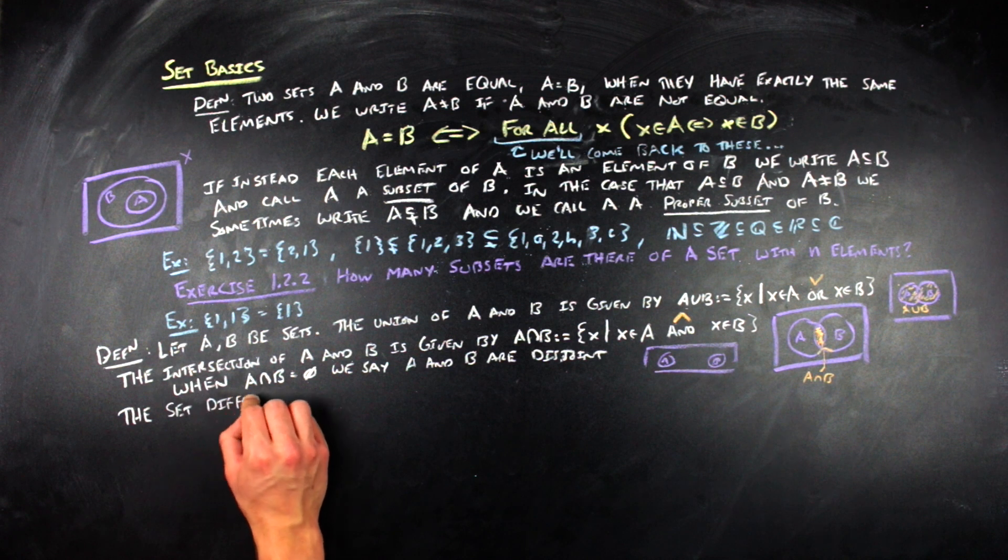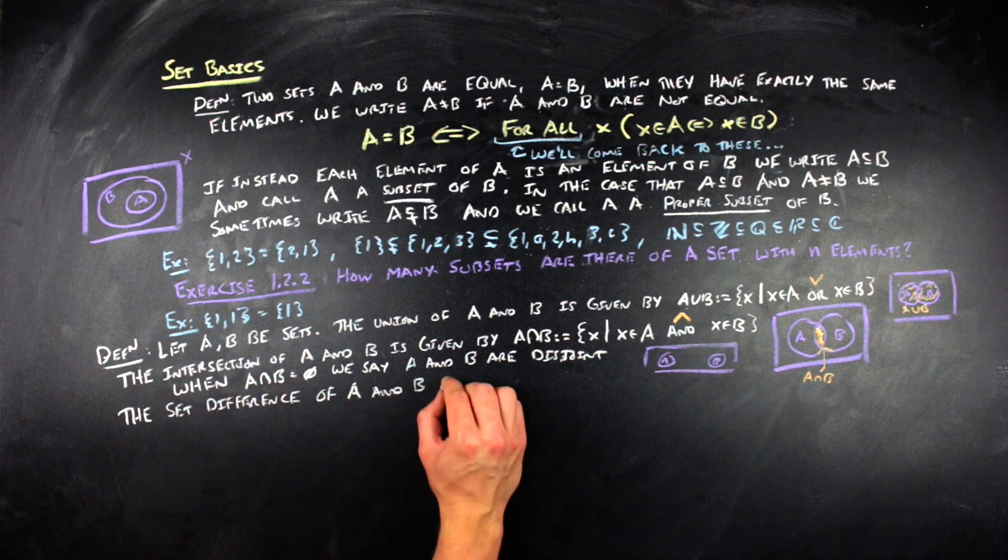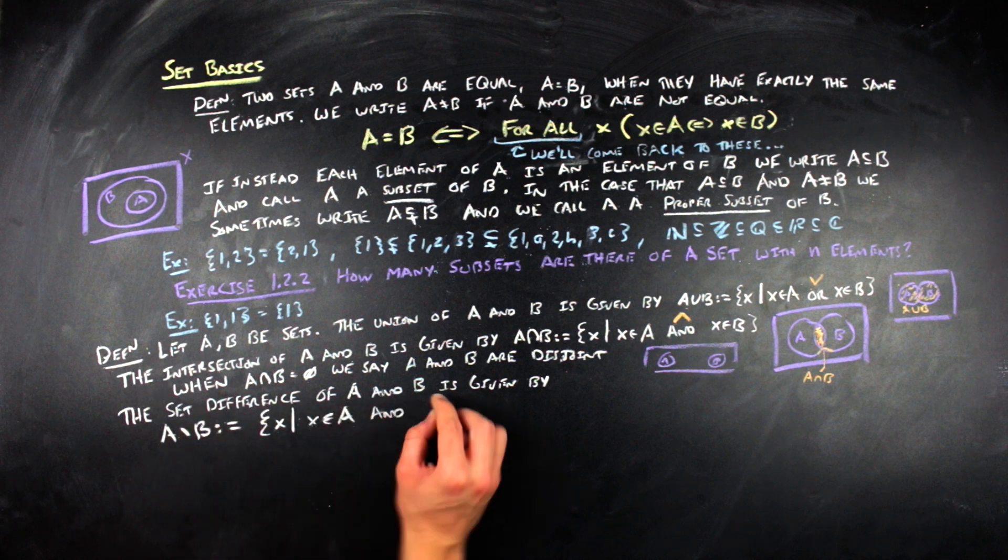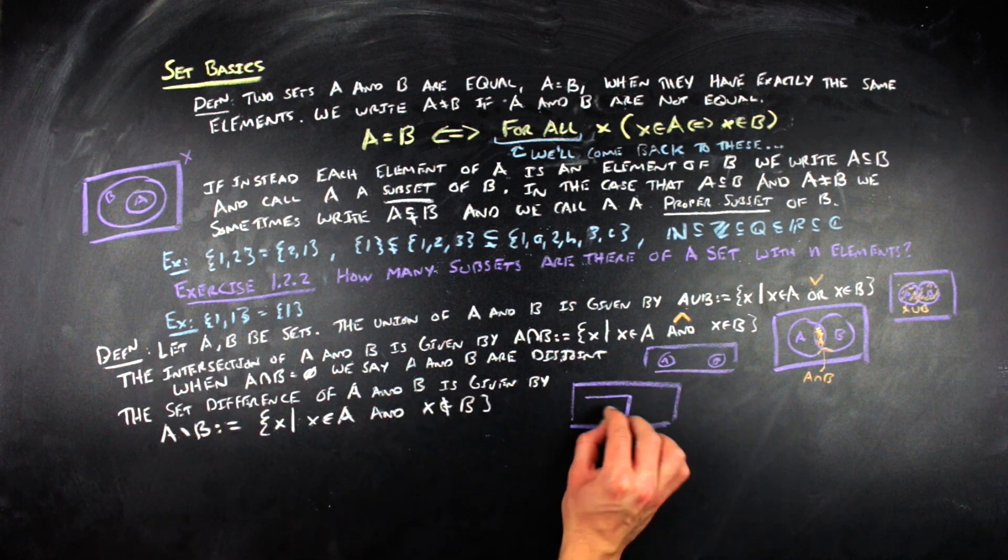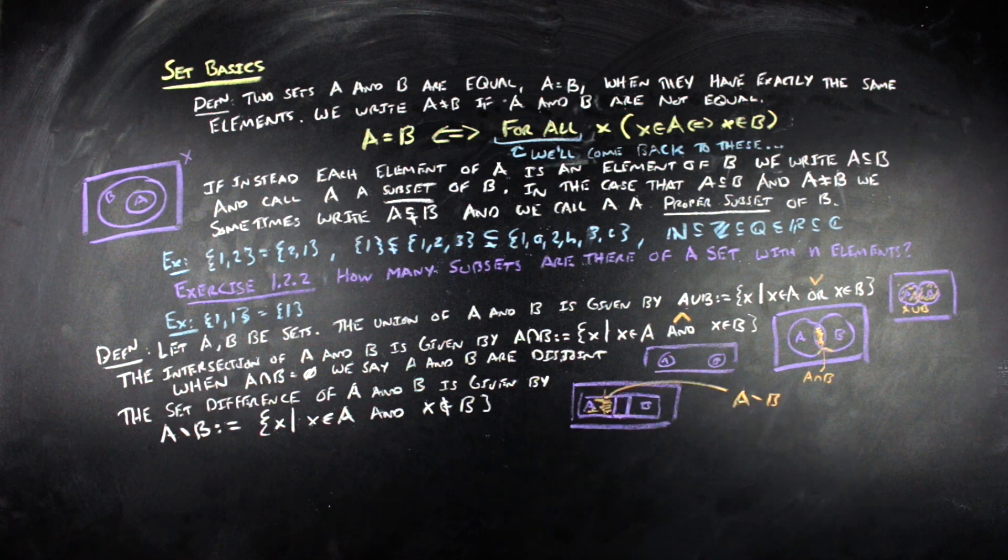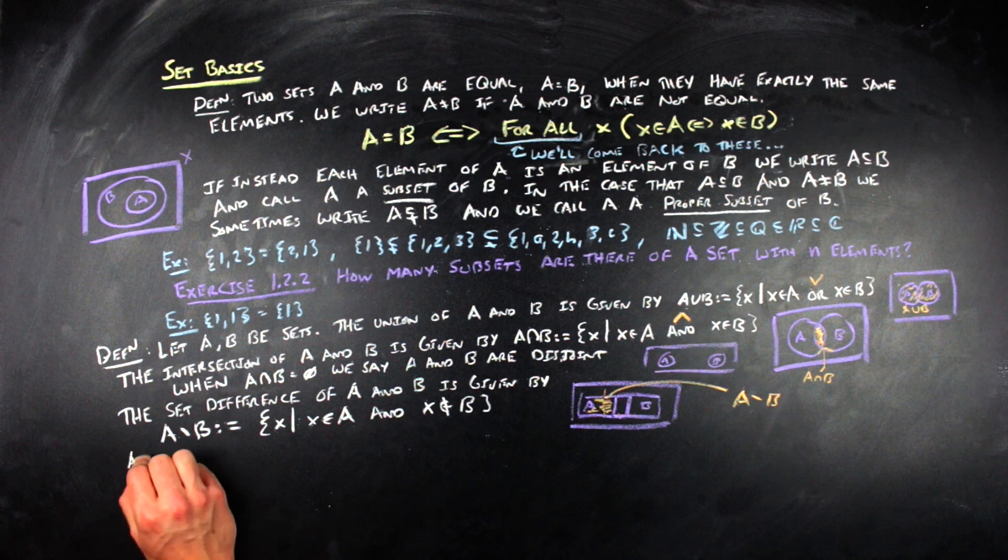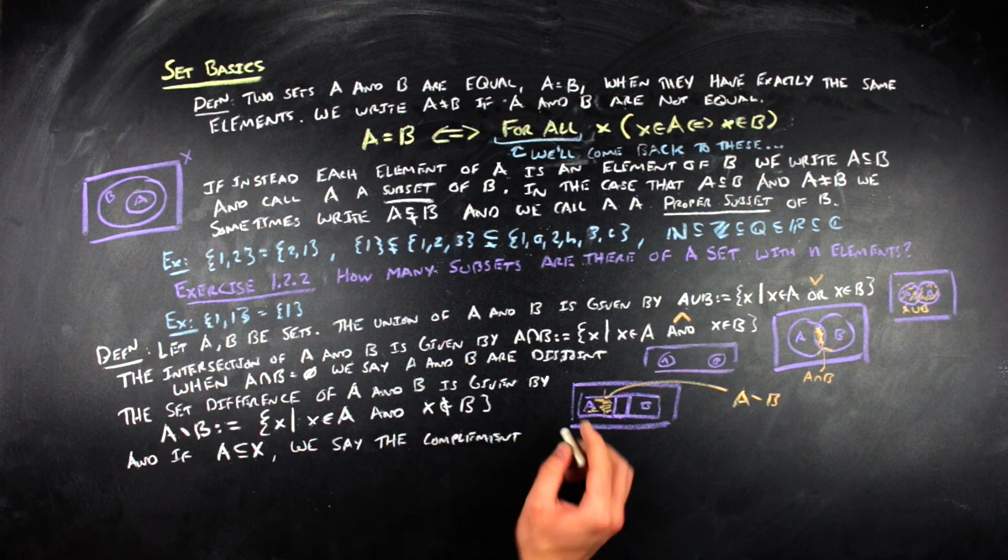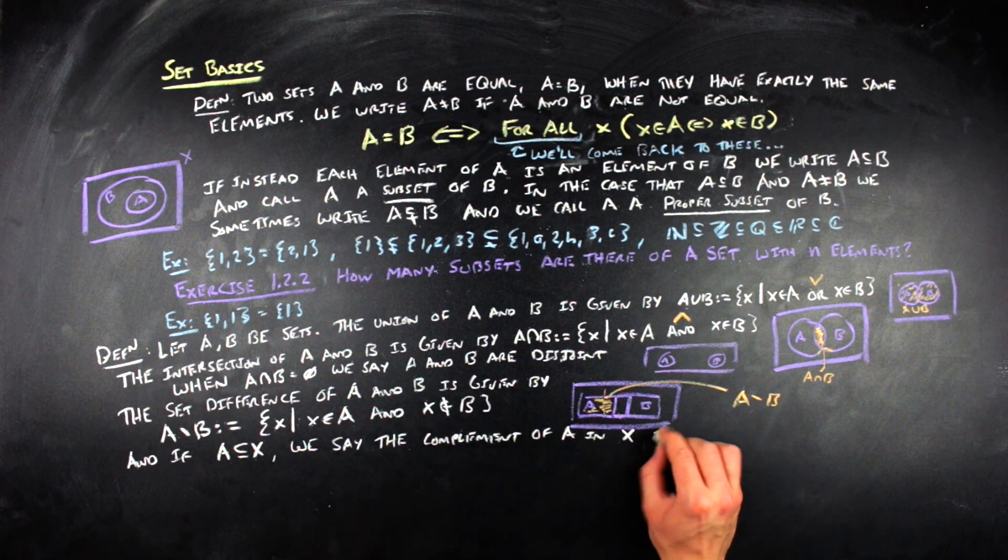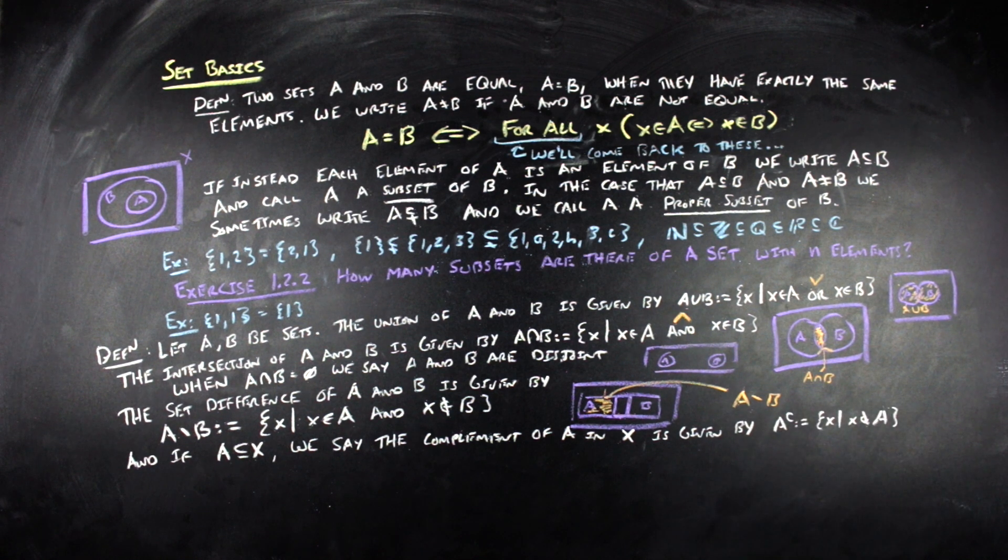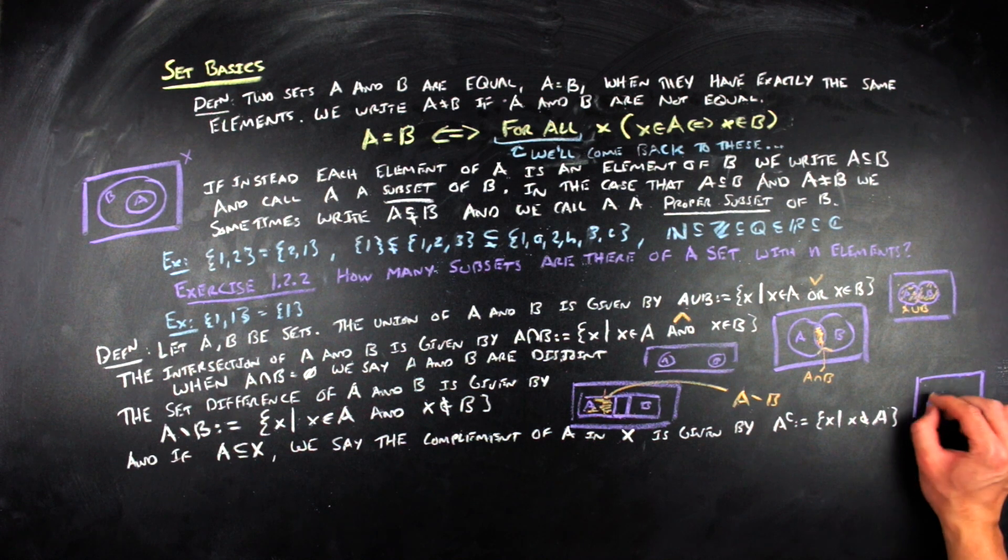And then we have set difference. So, the set difference A minus B is by definition equal to the set of all x's such that x is within A and x is not within B. So, it's just taking away anything that might be shared between A and B from A. So, a special set difference is that of the complement of a set within another set. So, if you have A a subset of x, where you think about x as like the universe in which you're working in, then A complement is going to be equal to all of the x's that were not in A. And that's the same thing as the set difference of x minus A.